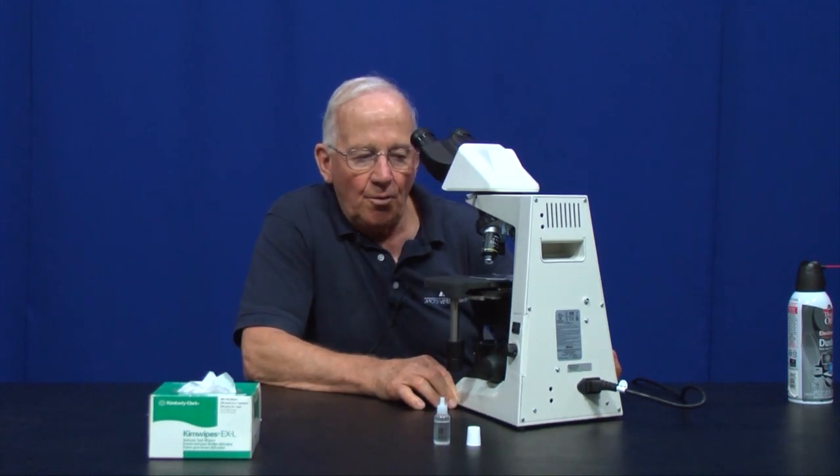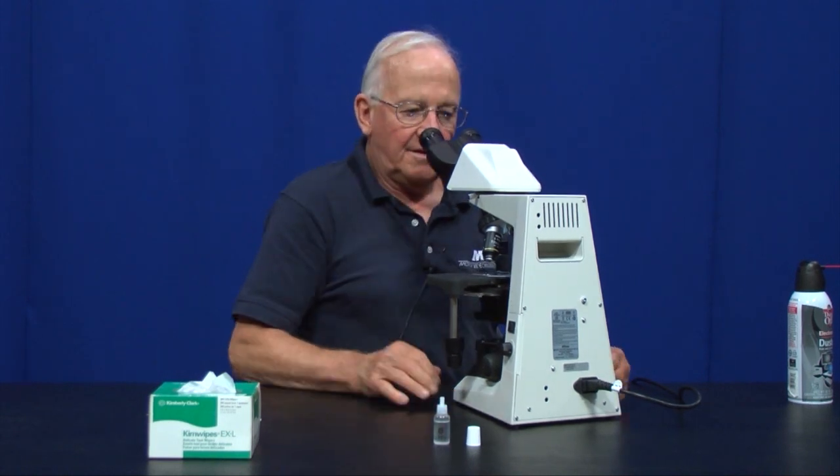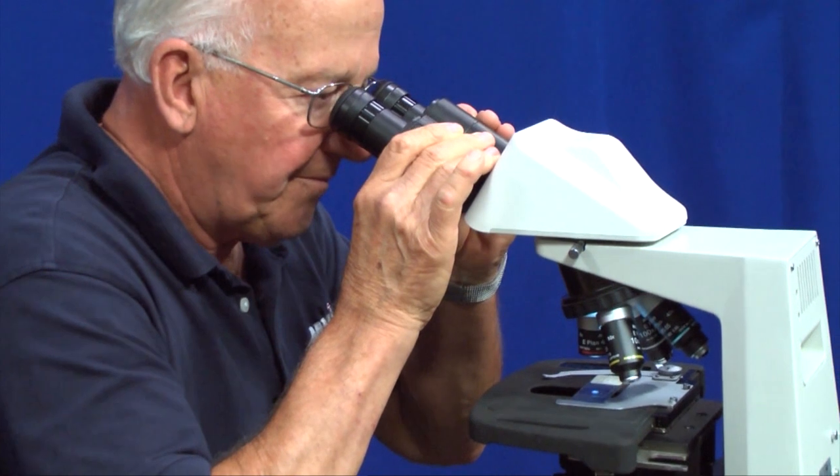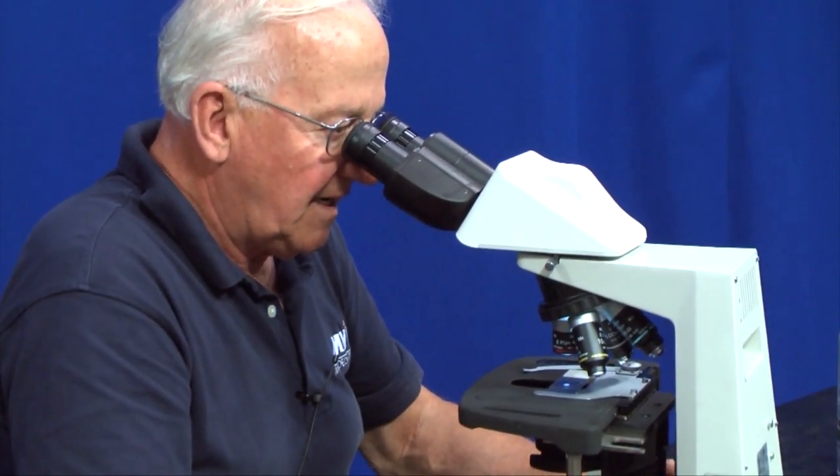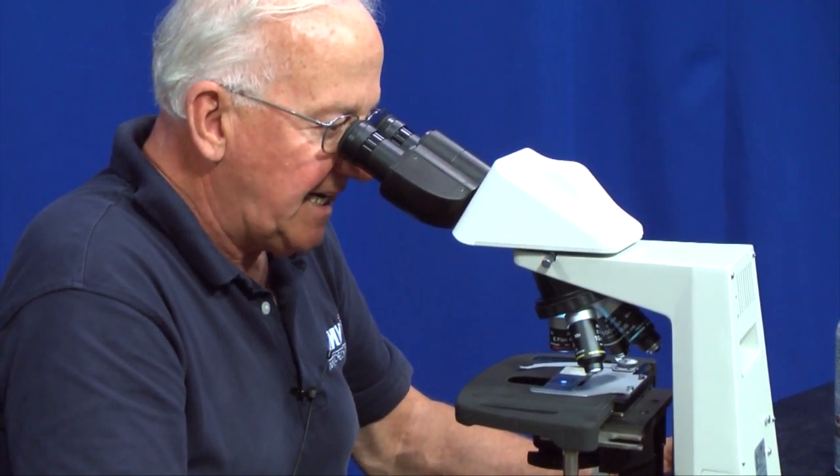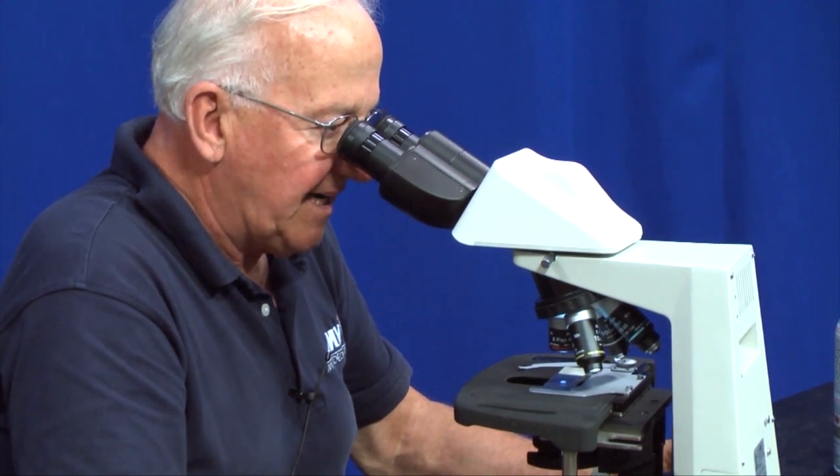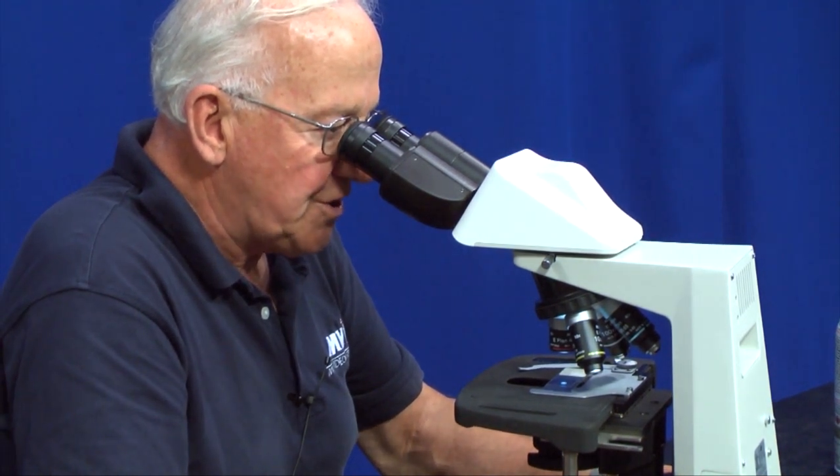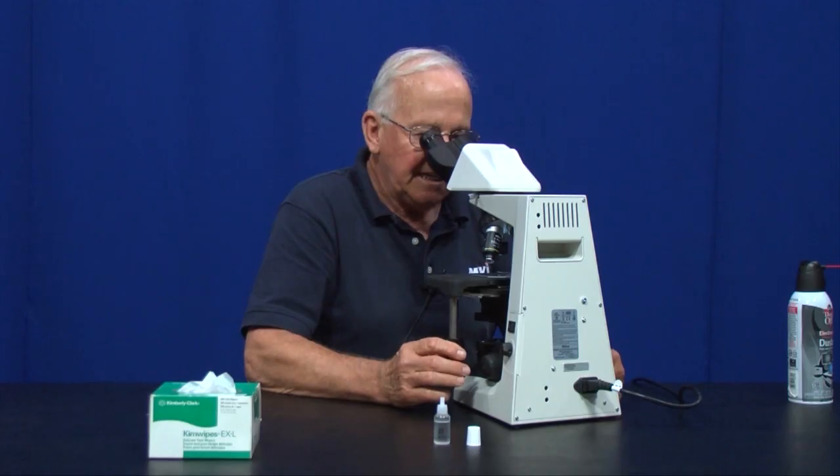Rack the stage up all the way until you feel a little bit of resistance. Now adjust your eyepieces so that you see only one image in the eye tubes. If you move the slide slightly while looking in the microscope, you will see probably a little bit of dust moving. If you do see that, that means you're pretty close to being in focus. Then use the coarse adjustment a little bit to drop it down until you see the image.